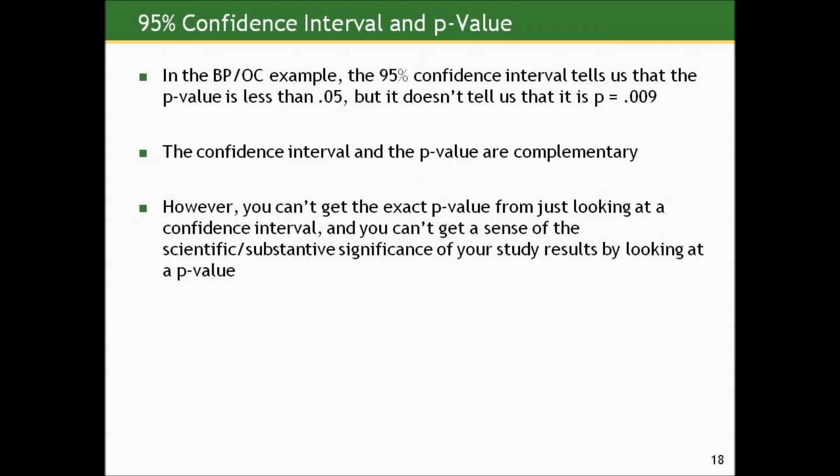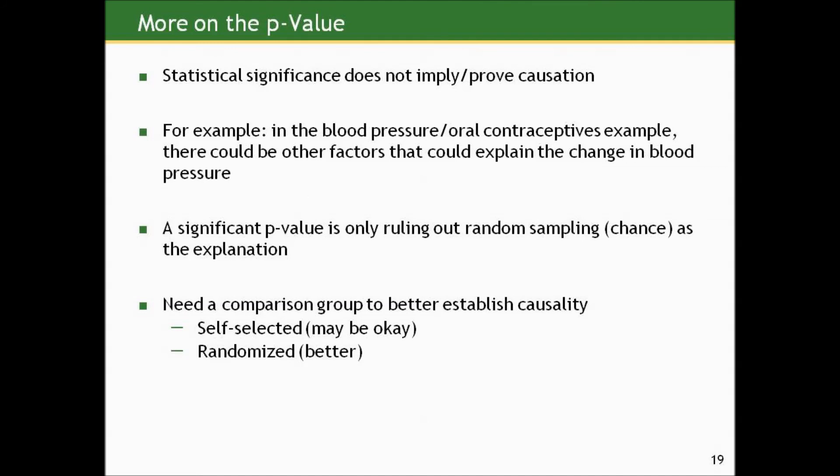More importantly, you can't get a sense of the scientific or substantive significance of your study results by looking solely at a p-value. Statistical significance alone does not imply or prove causation. In the blood pressure oral contraceptives example, there could be other factors explaining the change in blood pressure we observed — the statistically significant change — other than the oral contraceptive use. The only thing ruled out with a low p-value is random sampling error as an explanation. If we really wanted to investigate whether oral contraceptives were causing this, we'd need a better study with some sort of comparison group of similar women not on oral contraceptives.